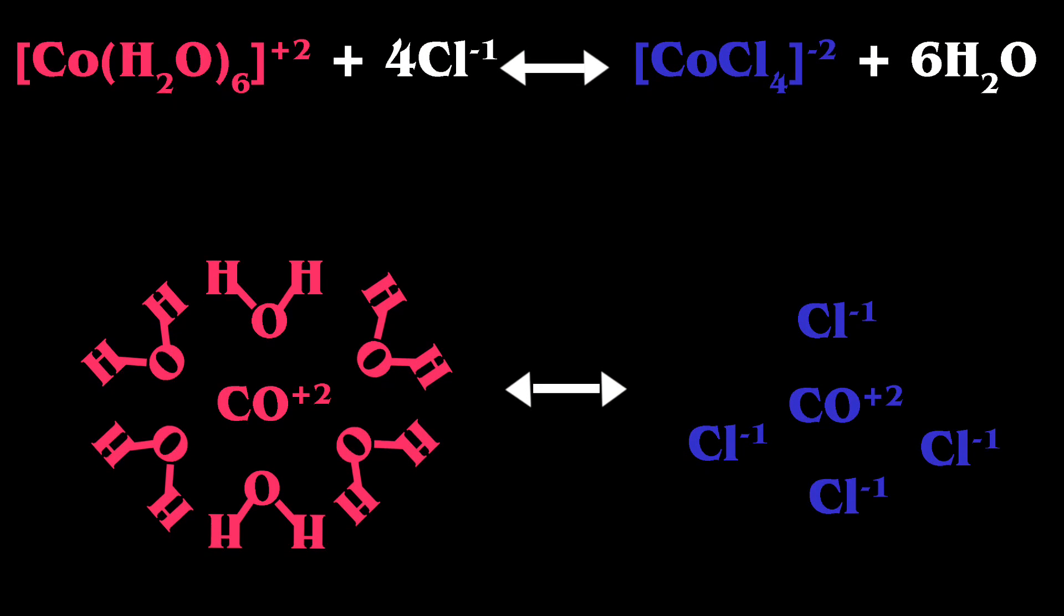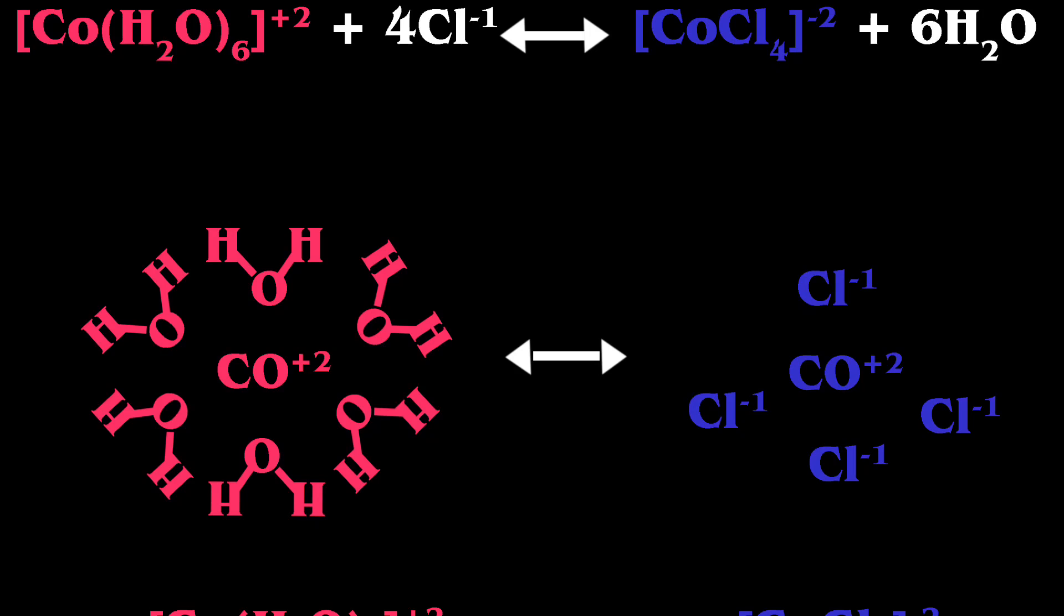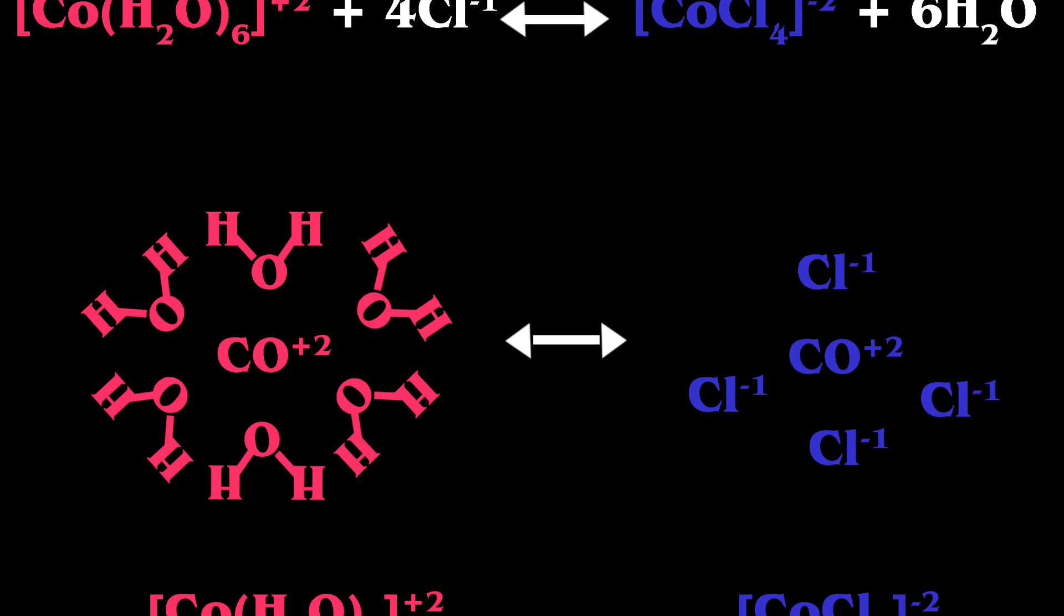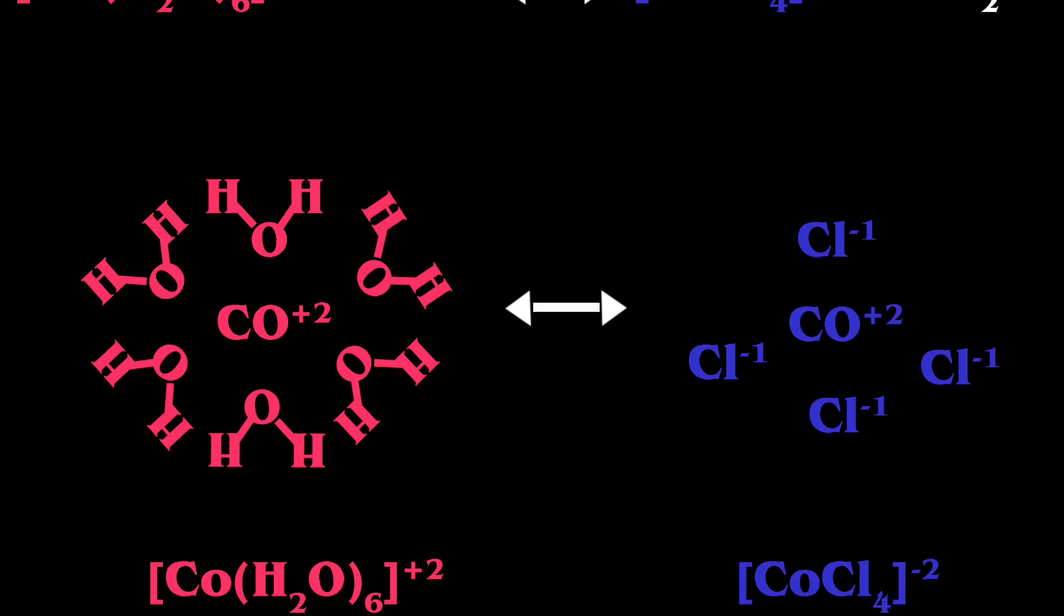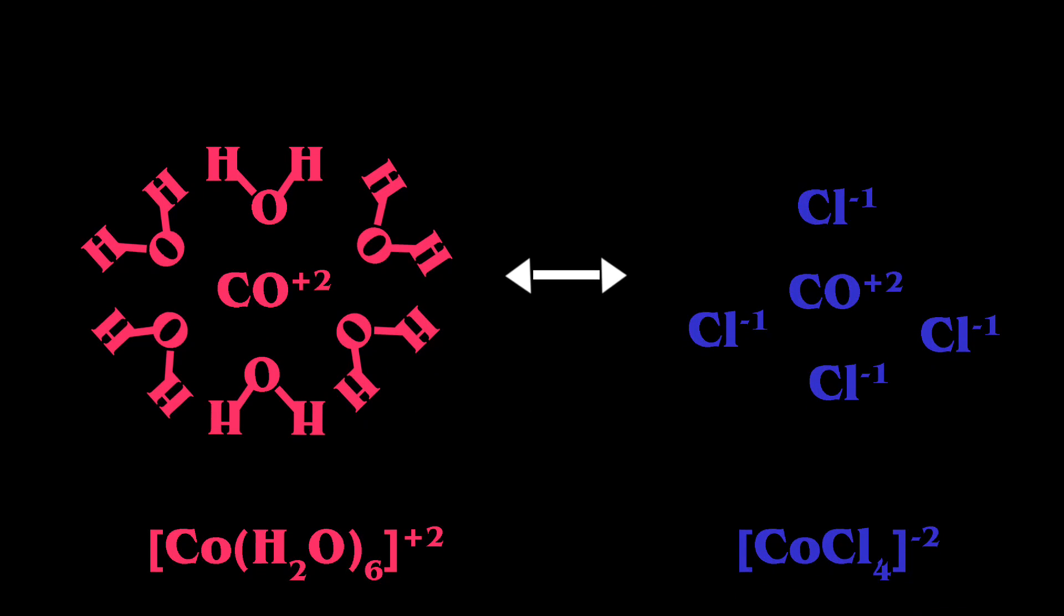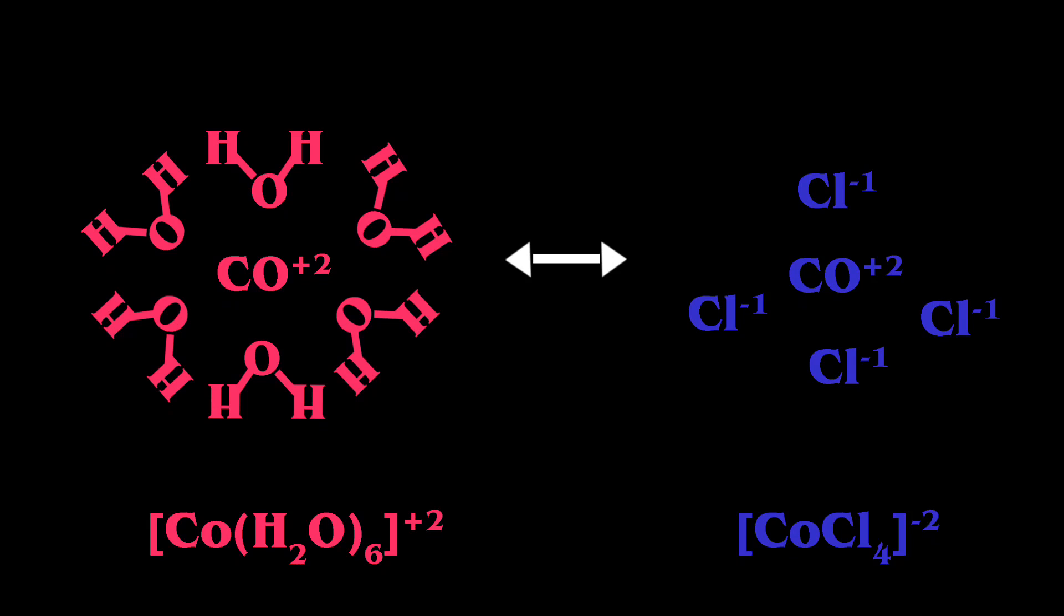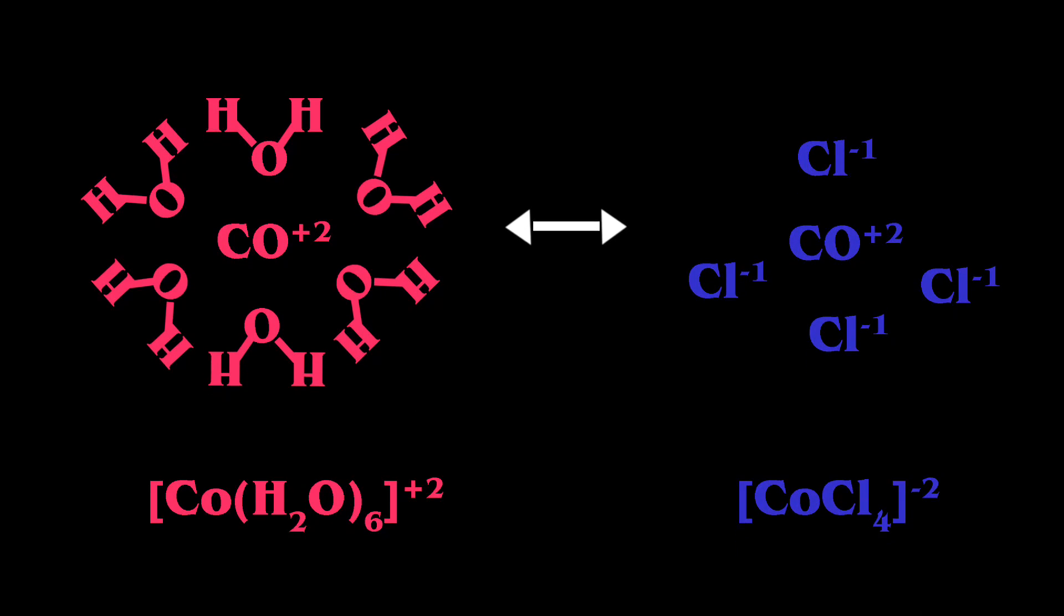In this lab we will be studying a chemical reaction at equilibrium between two complex ion formations of cobalt. Because they form complex ions with water and/or chloride ions very favorably, we can see which side of the reaction is favored by the color changes due to crystal field theory.